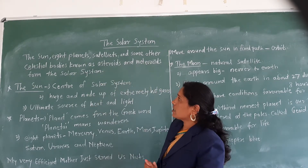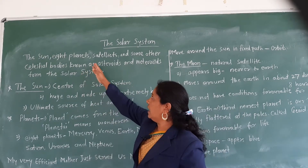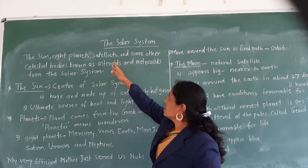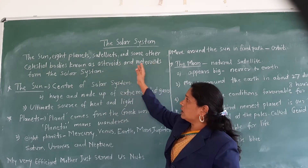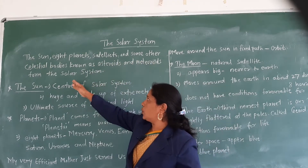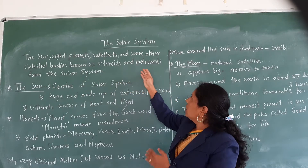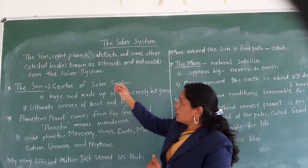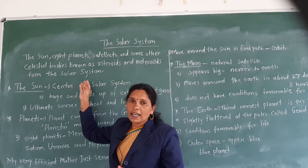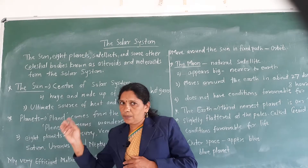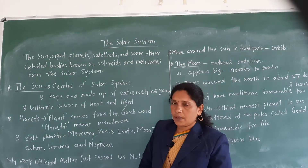So what is meant by the solar system? The sun, planets, satellites, and some other celestial bodies known as asteroids and meteorites form the solar system. This is our solar system.